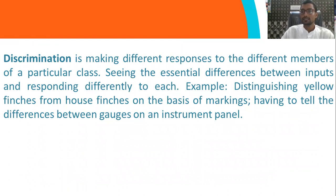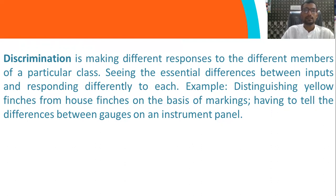Discrimination means seeing the essential differences between inputs and responding differently to each. For example, distinguishing yellow finches from house finches on the basis of marking, or having to tell the difference between the gauges of an instrument panel. If two things are very similar to each other, you have to divide or discriminate them by showing their particular distinguishing characteristics.